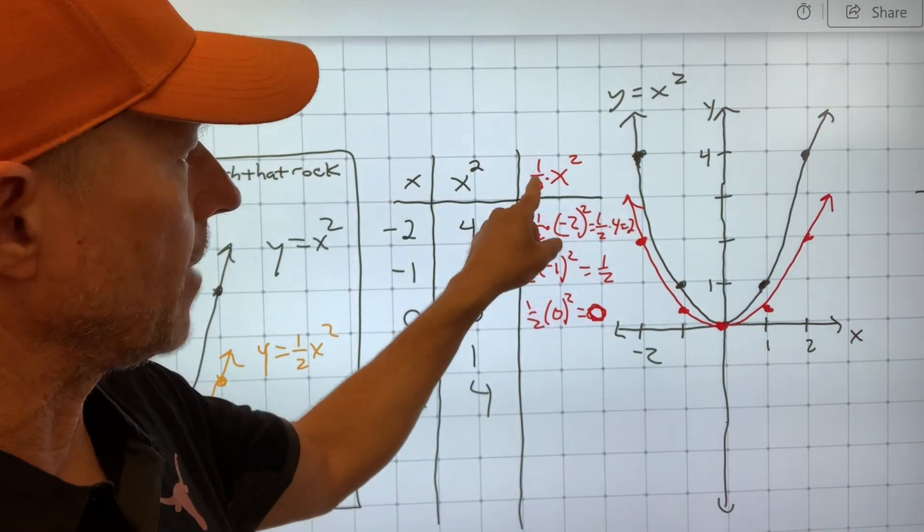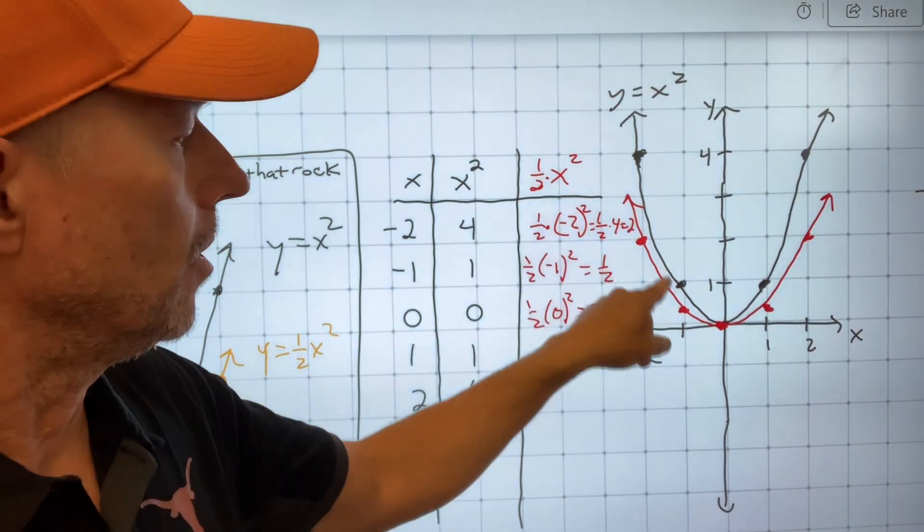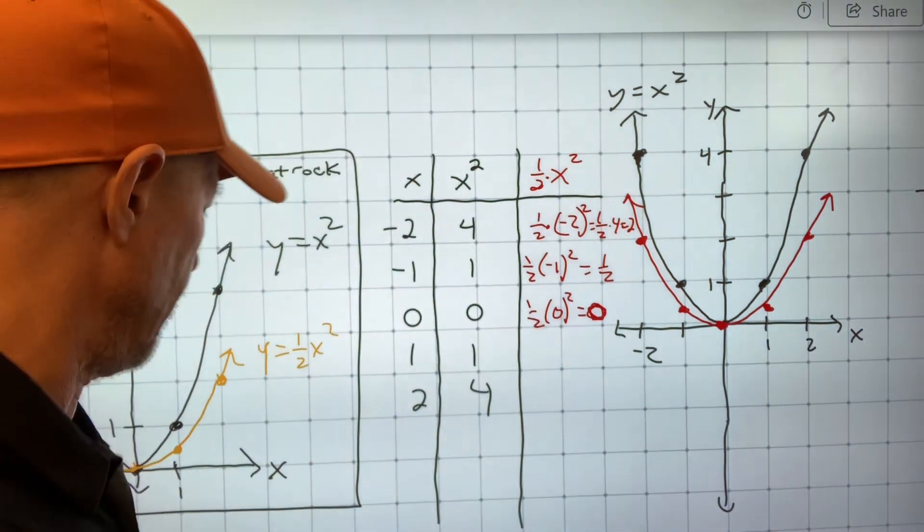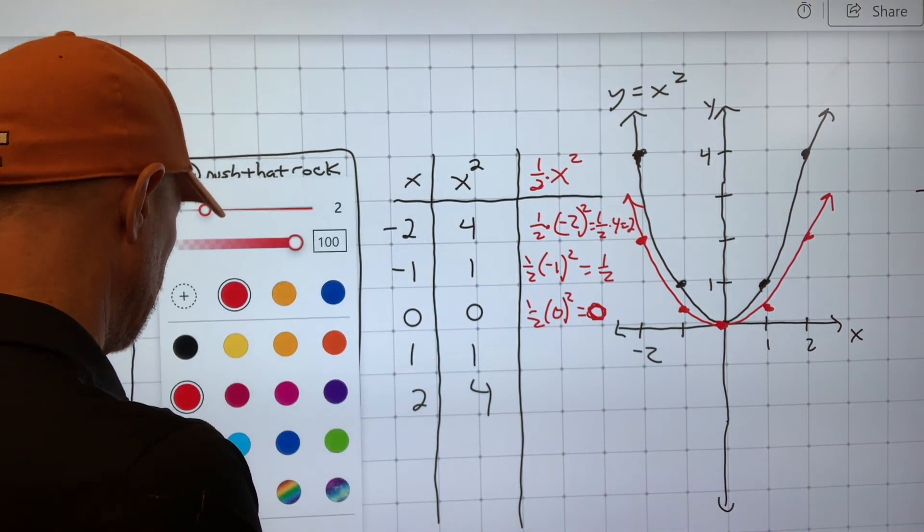Now, you could, if I multiplied by a whole number like 2, well, I would have doubled all the points, and so the parabola would have gotten much skinnier. If we think about, let's do that for a minute.